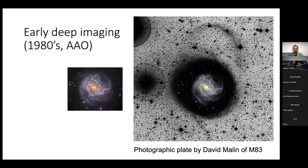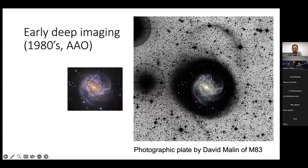In Malin's M83 image you can see the inner part of the galaxy, the outer disk region, and then outside that, all these plumes and tidal features that had never been seen before. Then we got CCDs, which gave much better spatial resolution and reproduction, but the field of view became small. For a couple of decades we could do excellent imaging of galaxy centers in great detail, but we were limited to small fields of view. A beautiful HST image shows exquisite detail of a galaxy, but it cannot show the tidal feature Malin revealed because it's simply not in the field of view.